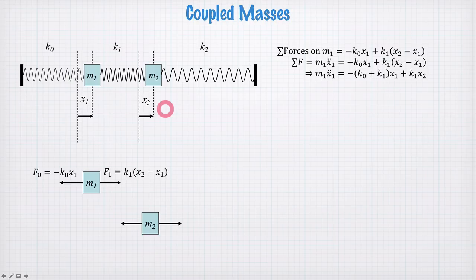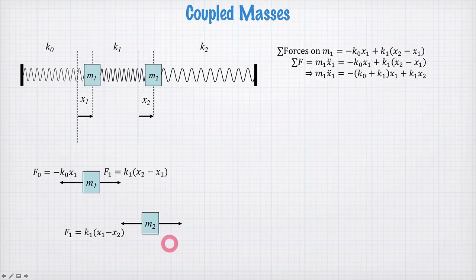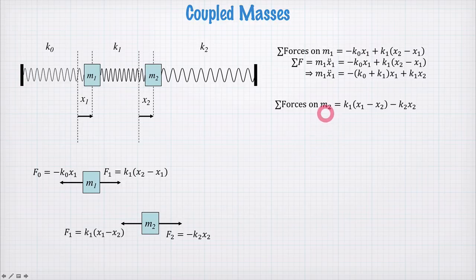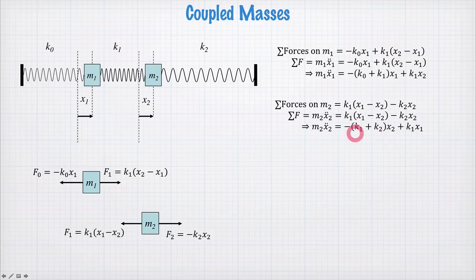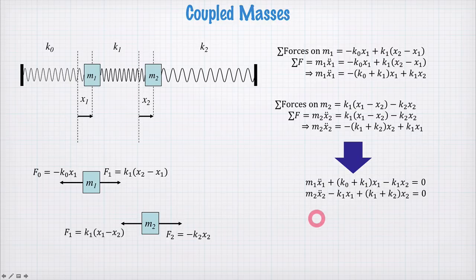Now let's move on to m2. The force due to spring k1 is equal and opposite to f1, so we can just write down negative f1. Then the force due to k2 is, again from Hooke's Law, negative k2 x2. Writing down the equations for m2 similarly, the sum of the forces equals mass times acceleration x2-double-dot. Rearranging to collect the terms of x2 and x1, these two equations give us a pair of coupled differential equations for the variables x1 and x2 — the positions of these two masses — and these are the equations we must figure out how to solve.